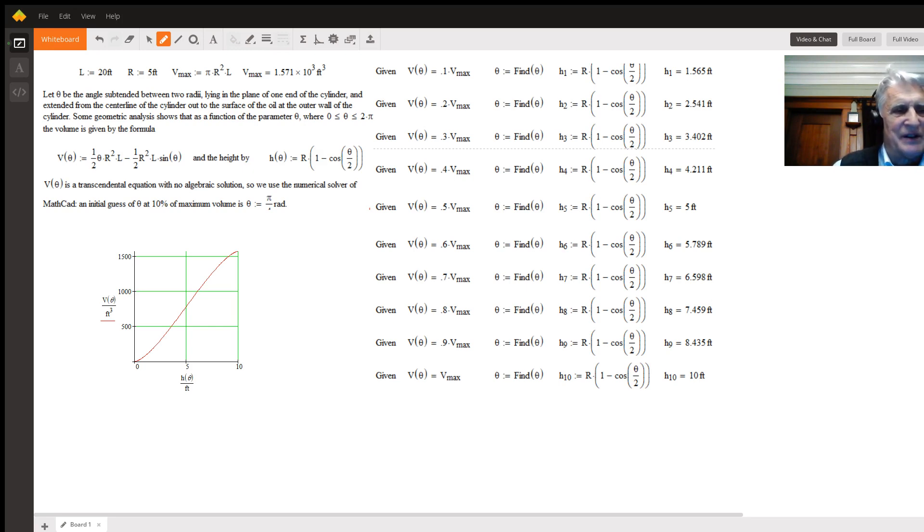It's given by this equation: V(θ) = (1/2)θr²L - (1/2)r²L·sin(θ). Theta runs from 0 to 2π. At zero, the volume is zero, and at 2π, the volume is πr²L, which is the volume of the tank.